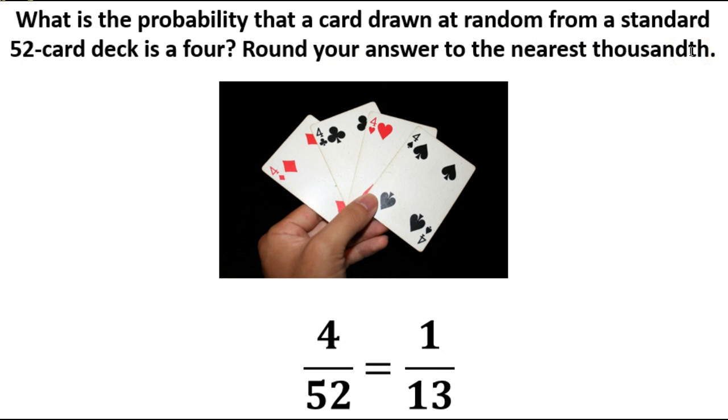Thousandth is 3 decimals, so I just take 1 divided by 13, and I end up with 0.077. And that would be my answer here.